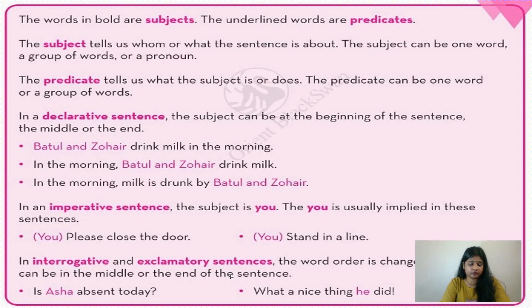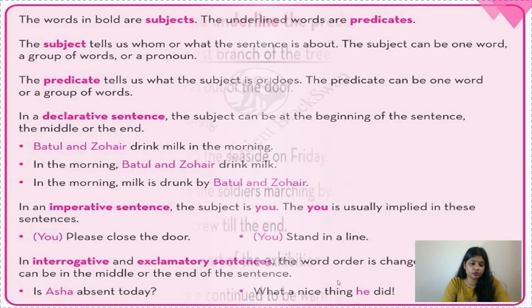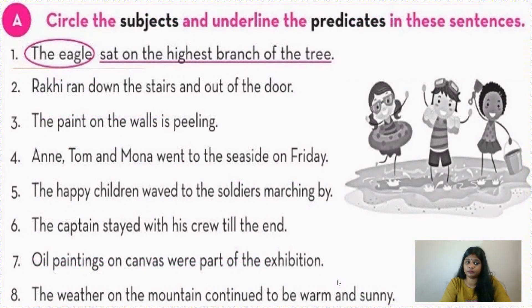In interrogative and exclamatory sentences, the word order is changed and the subject can be in the middle or at the end. When we frame an interrogative sentence, we start with a question word or helping verb, like 'Is Asha absent today?' or 'Where is Asha?' — so 'Asha' is in the middle or end. In an exclamatory sentence like 'What a nice thing he did,' 'he' is the subject. In 'How exciting the match was,' 'the match' is subject. In 'What a spectacular shot,' 'shot' is at the end. The subject can be anywhere.